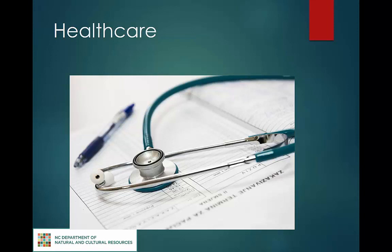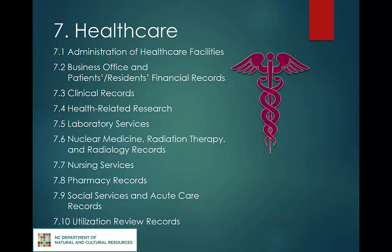The function of health care entails the maintenance and restoration of health by the treatment and prevention of disease. Administration of health care facilities covers HIPAA policies and patient safety organization records. Business office and patient/residence financial records breaks out these financial records related to health care facilities because of their unique retention requirements. Clinical records include patient and resident files. Health-related research documents work done to track and contain communicable diseases as well as environmental sciences testing. Laboratory services includes autopsies and blood bank records. Nuclear medicine, radiation therapy, and radiology records covers x-rays and MRIs. Nursing services includes floor census records and observation logs. Pharmacy records cover drug disposal records and schedule narcotics inventories. Social services and acute care records documents referrals and placements for patients and residents. Utilization review records document the utilization of health care facility staff, programs, and resources.